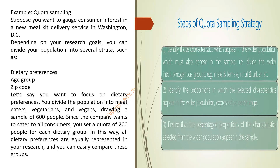For dietary preferences, I divide them into three categories: those who eat meat, those who are vegetarians, and those who are vegans. Since I want to take 600 people as my sample, I must take 200 from meat eaters, 200 from vegetarians, and 200 from vegans. This way it will be very easy to compare between groups, and as the sample size is exactly the same everywhere, whatever comparison you do will be exactly correct.